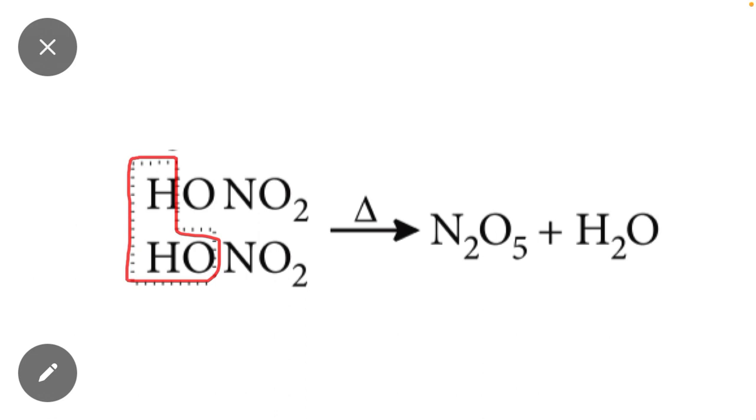When the water molecule is removed due to presence of heat, then the remaining molecule becomes N2O5. It means N2O5 is a nitric acid anhydride. N2O5 is a nitric acid anhydride.